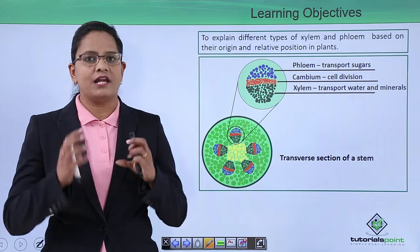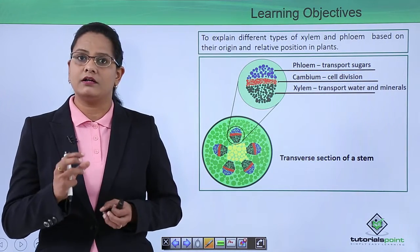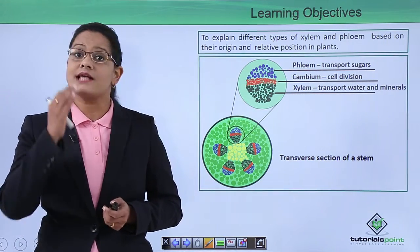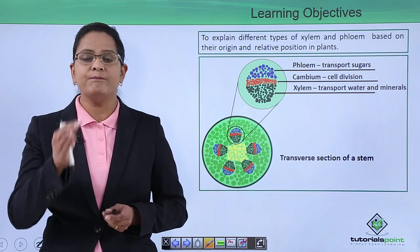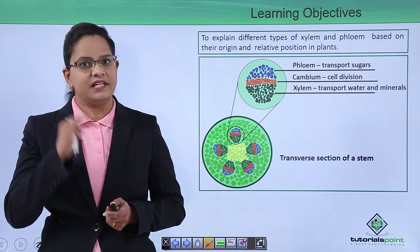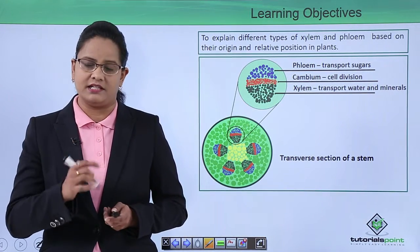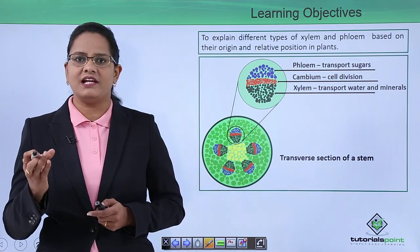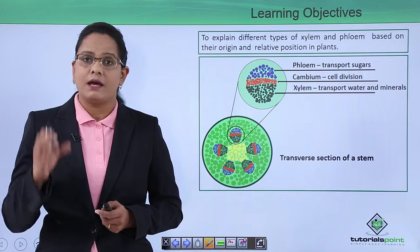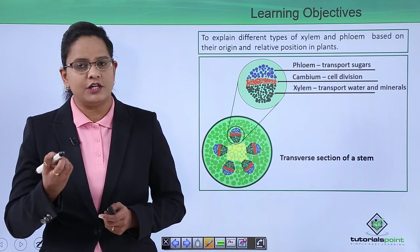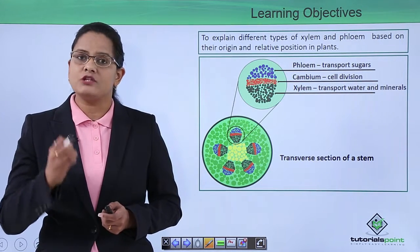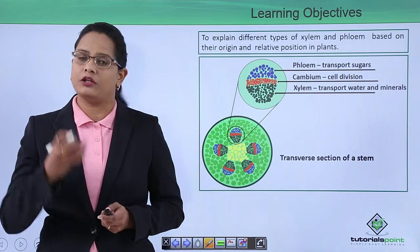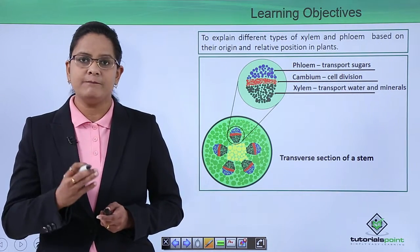The basic structure of xylem and phloem is such that they occur in the form of bundles, wherein the phloem lies outside towards the stem and the xylem is on the inward side. Now there are different types of xylem and phloem based on where they originate and based on where they are located in the stem, root, or leaf.